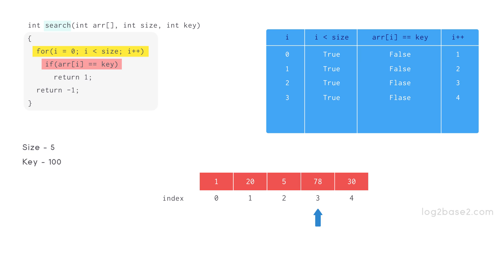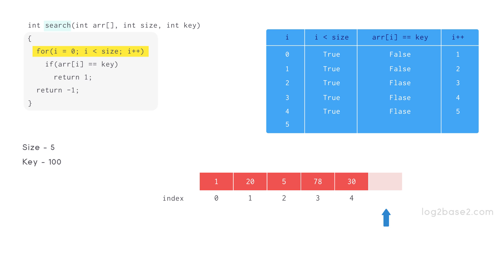Now i is incremented and it becomes 4. Now 4 is less than 5 so condition is true. So compare 30 and 100 — the comparison returns false and i is incremented and it becomes 5. Now when we check if i is less than 5 the condition is false. So it will come out of the loop and returns -1, and the search is not found.